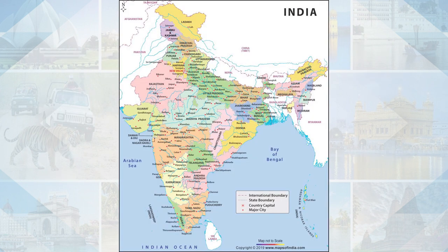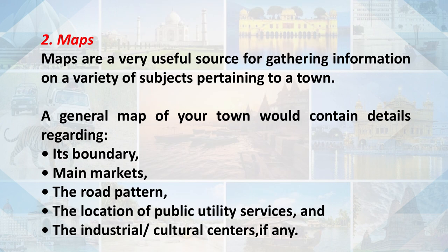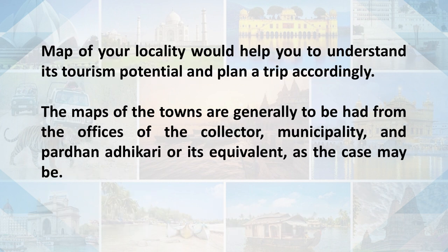Another important source is maps. Maps are a very useful source for gathering information on a variety of subjects pertaining to the city. A general map of your town would contain details regarding its boundaries, main markets, road patterns, location of public utility services, and industrial or cultural centers. With the help of a map, you can understand the tourism potential and plan a trip accordingly. Maps of towns are generally obtained from the offices of the collector, municipality, and pradhanadikari, or its equivalent.